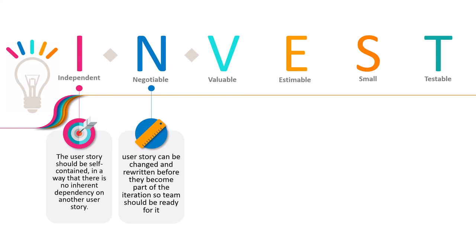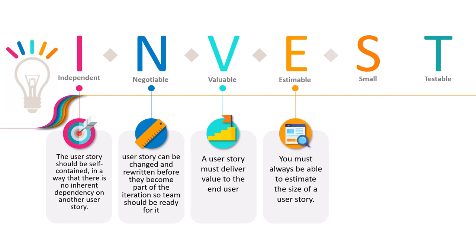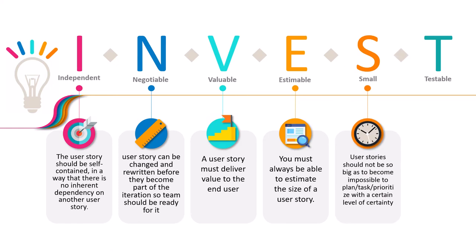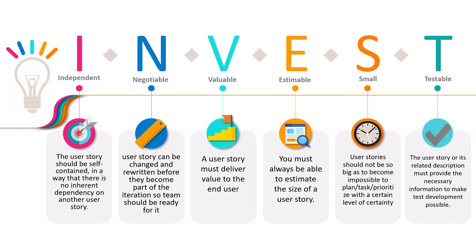Negotiable means the user story can be changed and rewritten before becoming part of the iteration. Valuable means a user story must deliver value to the end user. Estimable means you must always be able to estimate the size of a user story. Small means user stories should not be so big as to become impossible to plan, task, or prioritize. Testable means the user story or its related description must provide the necessary information to make test development possible.